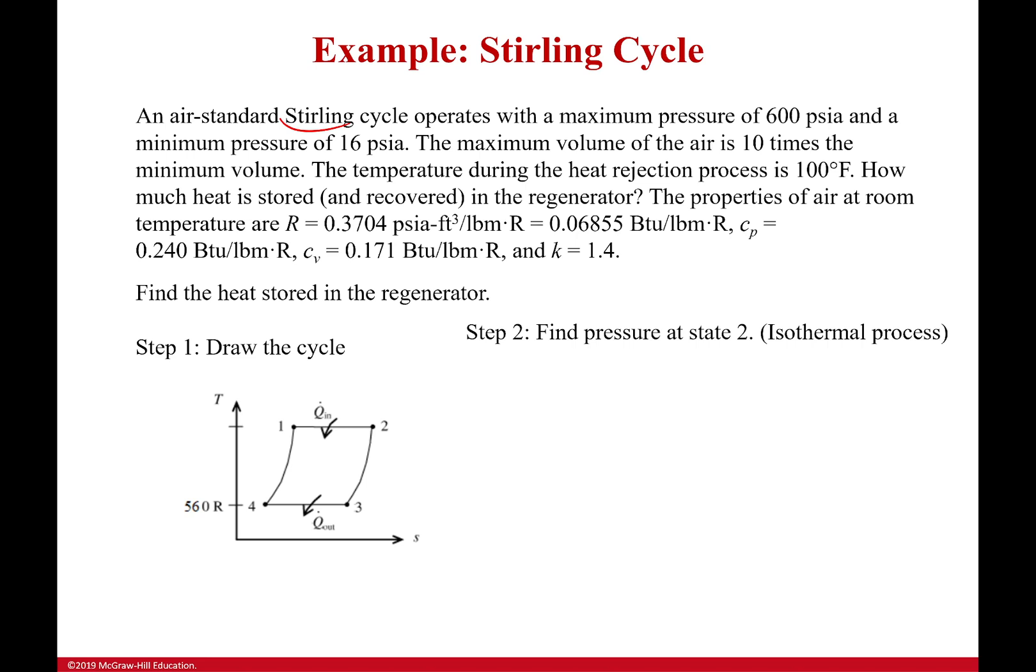So let's go ahead and find the pressure at state 2. It's an isothermal process. We know the temperature stays constant, so it does help us out a little bit. Because PV over T is equal to PV over T for these heat addition or heat rejection processes. Temperature is constant. I get rid of those guys. It's just the Ps and the Vs. Another thing it told me was that the maximum volume of the air is 10 times the minimum volume. So I actually know what V1 and V2 are.